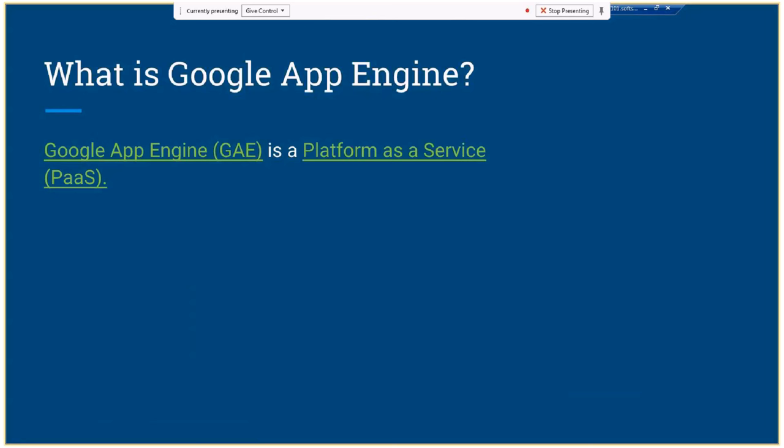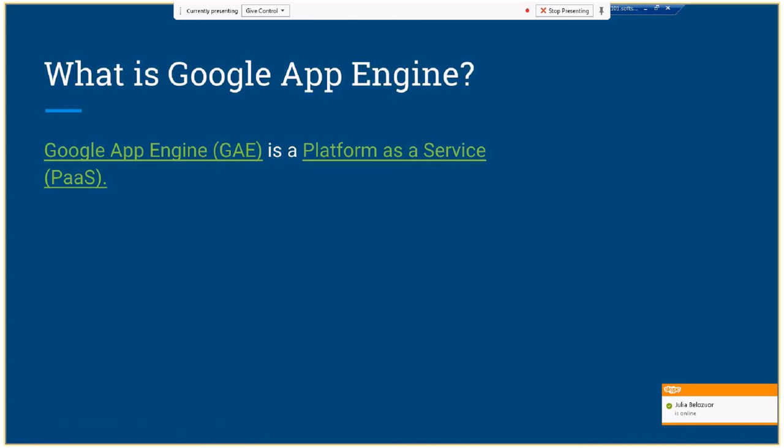What is Google App Engine? Google App Engine is a platform as a service — a category of cloud computing service that provides a platform allowing your customers to develop, run, and manage applications without the complexity of building and maintaining the infrastructure. You can just write your code in your environment, deploy that code, and Google will take care of everything.